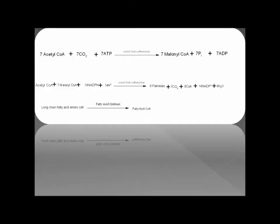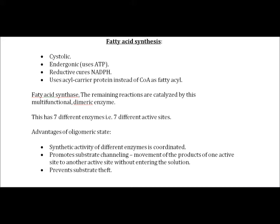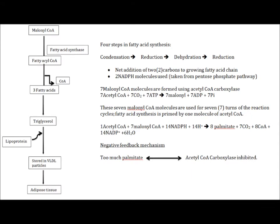Acetyl-CoA carboxylase is covalently regulated by hormone-mediated cAMP-dependent protein kinase and AMP-activated protein kinase. Fatty acid synthesis occurs in the cytosol, uses ATP, and uses acyl carrier proteins instead of CoA as fatty acyl carriers. The remaining reactions are catalyzed by fatty acid synthase, a multifunctional dimeric enzyme with seven different enzymes on seven different active sites. There are four main steps in fatty acid synthesis: condensation, reduction, dehydration, and reduction again.